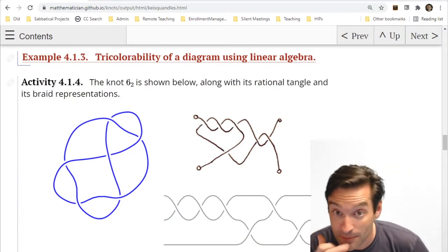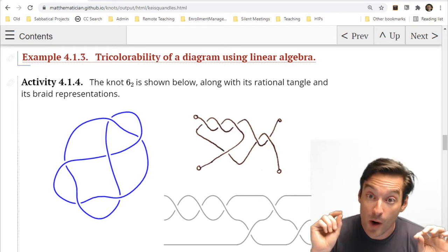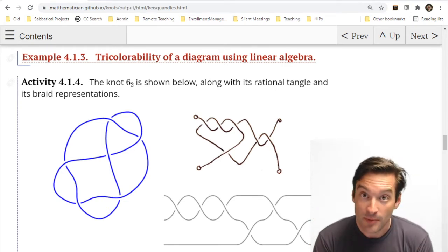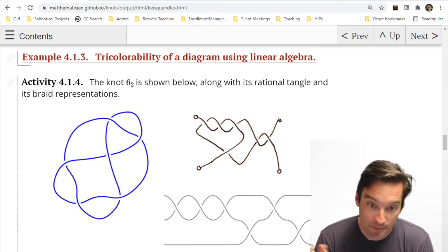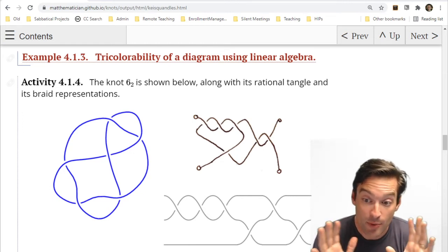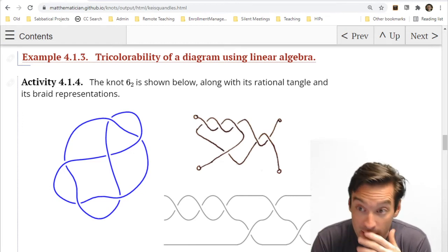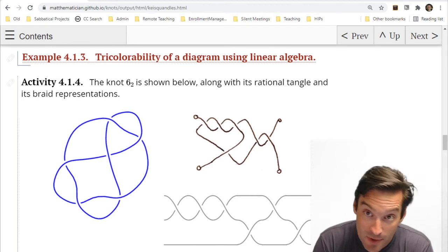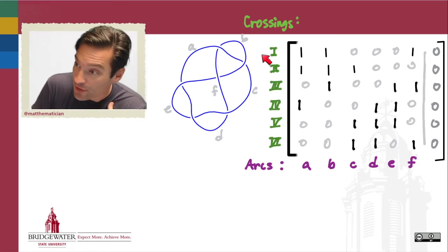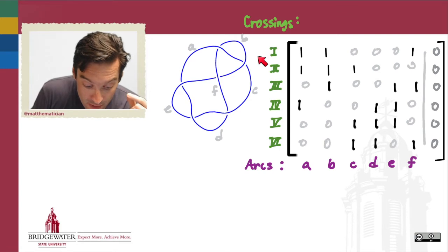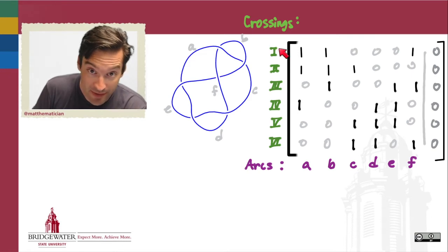Here is the six-crossing knot in activity number four. Remember that when you build a system of linear equations, each equation comes from one of the crossings, and each variable corresponds to the color of one of the arcs. Label the arcs U, V, W, X, Y, Z, and come up with the six equations whose satisfaction is equivalent to the tricolorability of this six-crossing knot. Then we'll use technology to actually solve that system.